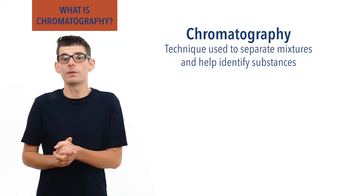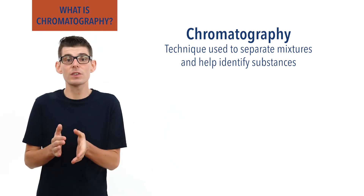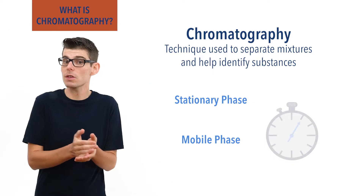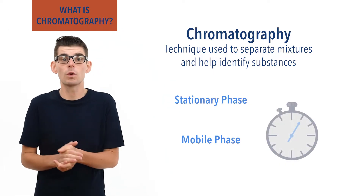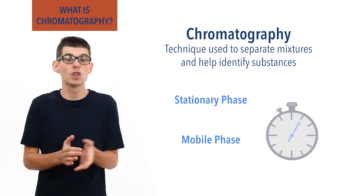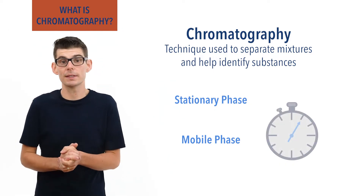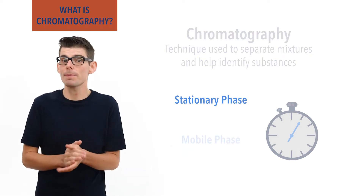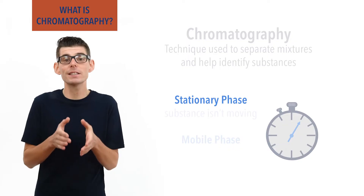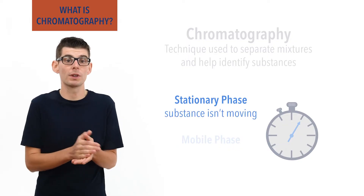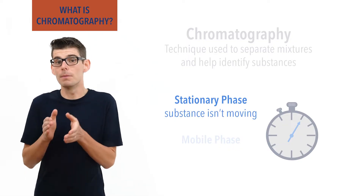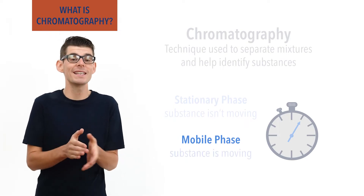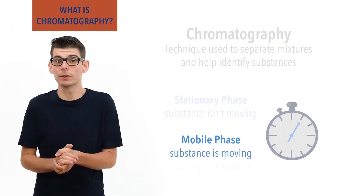All types however work on the same idea of a stationary and mobile phase and the length of time each substance spends in either one of these phases during a chromatography process. The stationary phase refers to the time spent by a substance when it isn't moving, and the mobile phase refers to the time spent by a substance whilst it is moving, usually in a solvent.